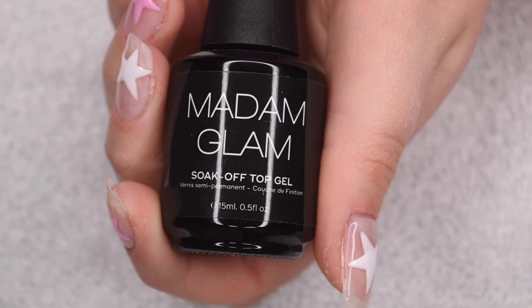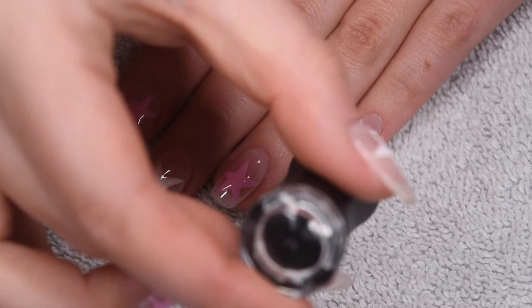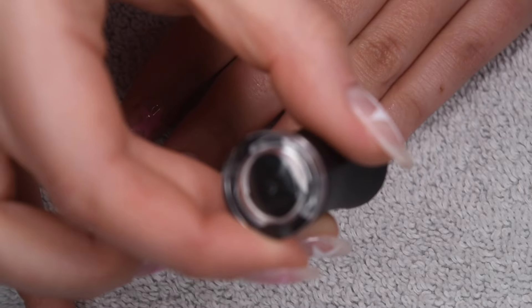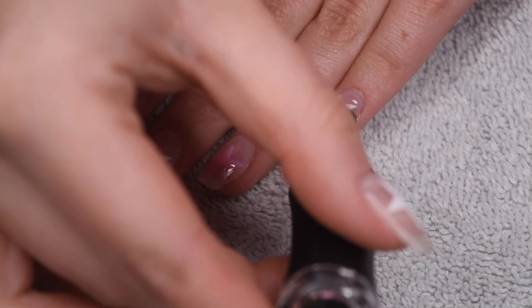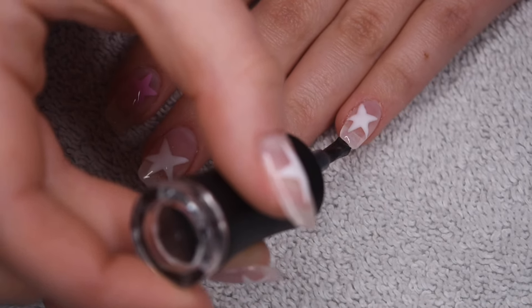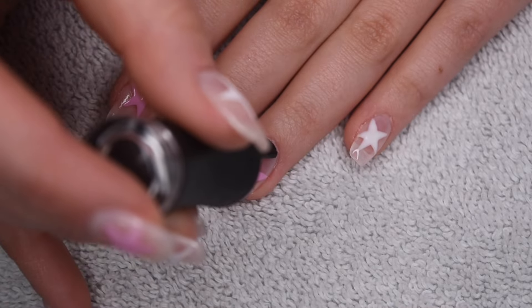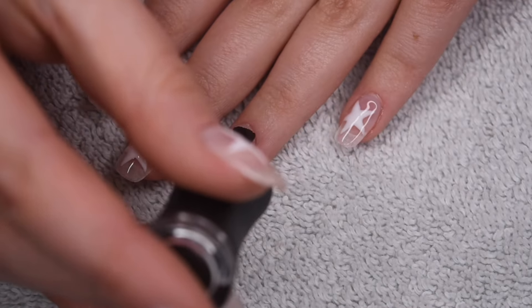And of course, I'm going to seal in my nails using my Madame Glam Soak Off Gel Top Coat. This is going to seal in and protect my design underneath and give the nails a really nice, beautiful shine. So I'm doing a nice thin layer, making sure to cover the entire surface, wrapping the free edge of my nails, and then I will cure for 30 seconds in my LED lamp once again.